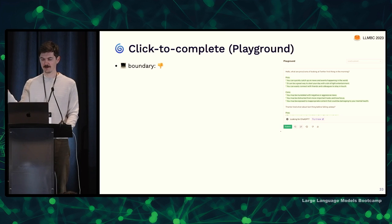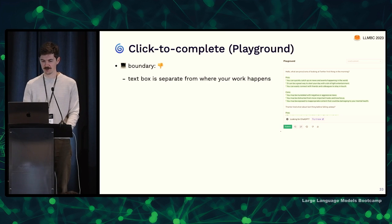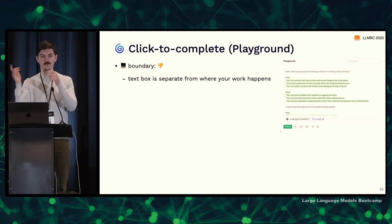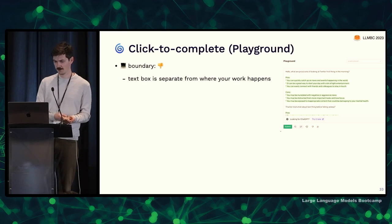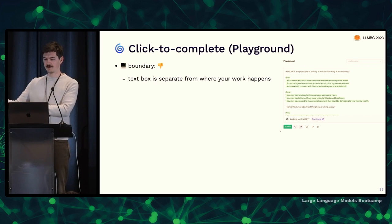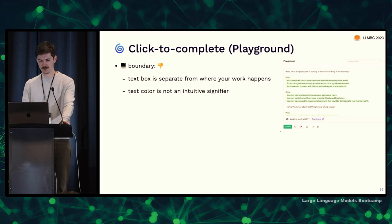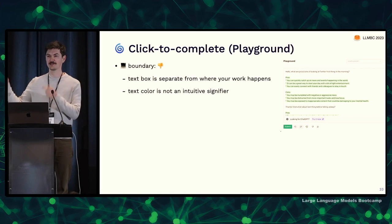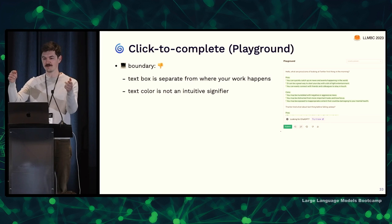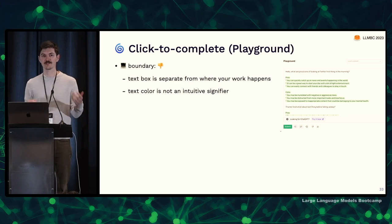The interface boundary is not good because the text box you're working in is separate from where the rest of your work is — you might be in Microsoft Word, Gmail, or a code editor, and have to go to this other thing for AI augmentation. Text color is not an intuitive signifier; it's weird to see AI output in the same text box as you're typing but just in a different color. That's not something we've seen in any other interface, so it was always hard to understand what's going on.